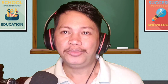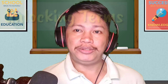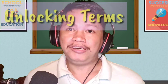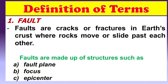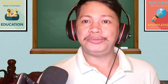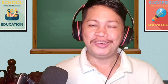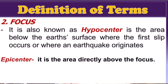To unlock our understanding of some terms we need to use in this topic, here are some key definitions. First, fault — faults are cracks or fractures in the Earth's crust where rock moves or slides past each other. Faults are made up of structures such as fault plane, focus, and epicenter. Next, focus — also known as hypocenter, it is the area below the Earth's surface where the first slip occurs, or where an earthquake originates.